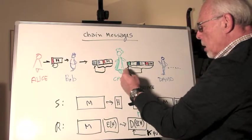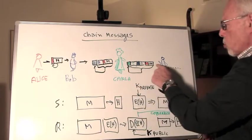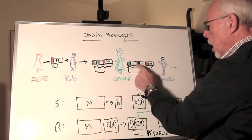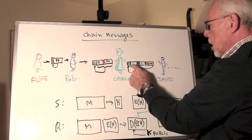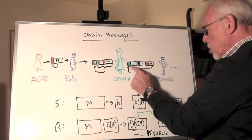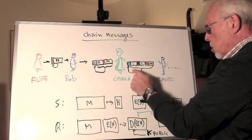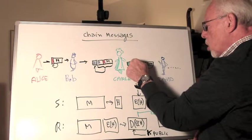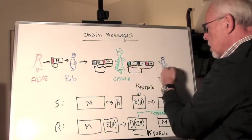And then Carla wants to add her comments. So she takes the entire package that was sent to her up to here and adds her comments. There is a new package here. You take all this stuff and you hash it, or what she hashes it, encrypts it, and the encrypted hash she adds to the package and sends it to David.